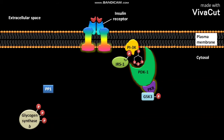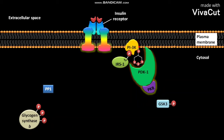The active PKB then phosphorylates active GSK3 in its pseudosubstrate region. Due to this phosphorylation, GSK3 becomes inactive, and the phosphorylated inactive GSK3 then leaves the active PKB.